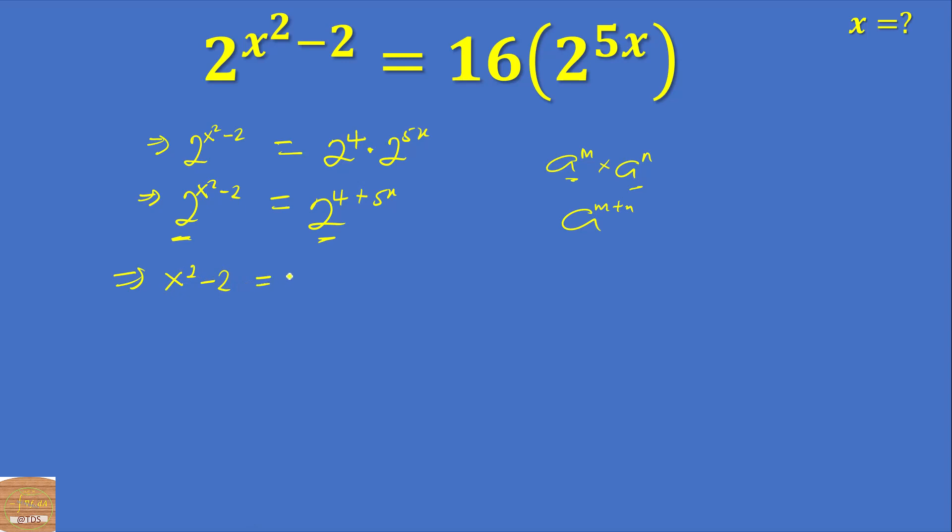So this is a quadratic equation. Let's arrange them. We have x squared minus 5x, minus 2 minus 4, so we have minus 6 equals 0. Let's solve this quadratic equation.